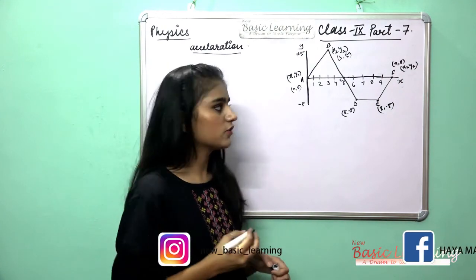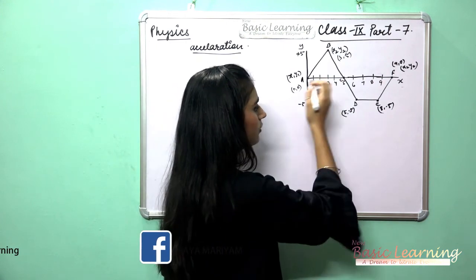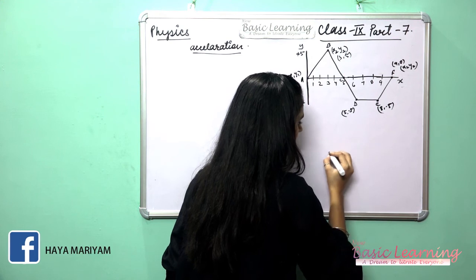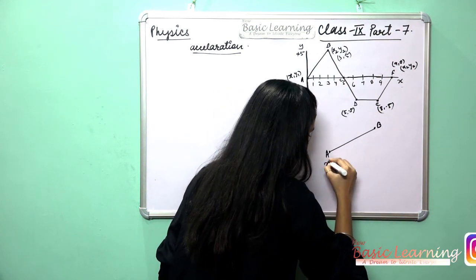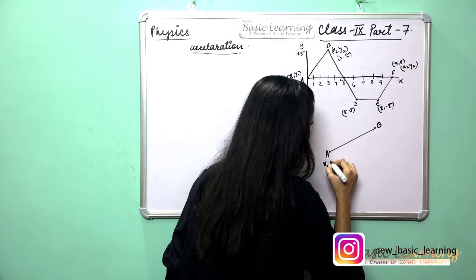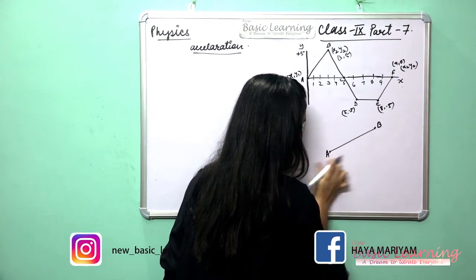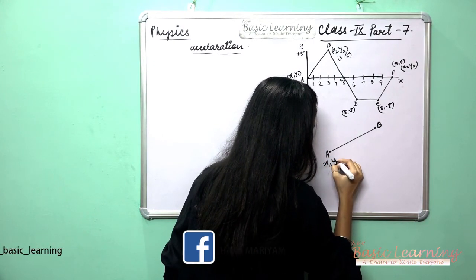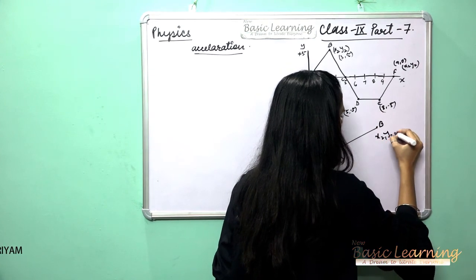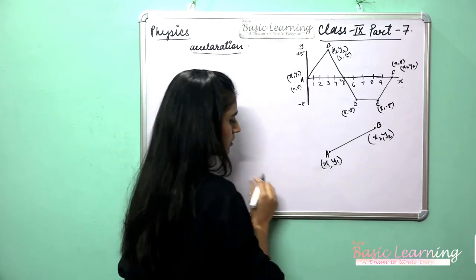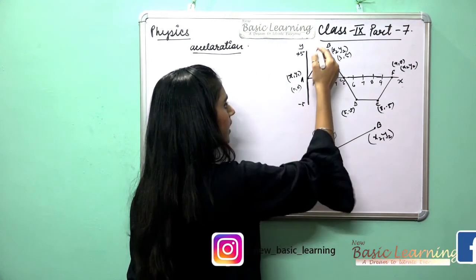First we will focus on the concepts, because using the coordinate system we are going to calculate the acceleration. Suppose we have a straight line with point A and point B. Point A has coordinate (x1, y1) and point B has coordinate (x2, y2). With the help of slope, we can calculate the acceleration.